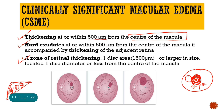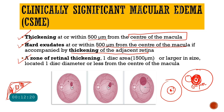Criteria two for CSME: presence of hard exudates at or within 500 micrometers from the center of the macula, provided those hard exudates are accompanied by thickening of the adjacent retina. So you need hard exudates within the 500-micrometer circle centered on the fovea, along with an adjacent area of retinal thickening.